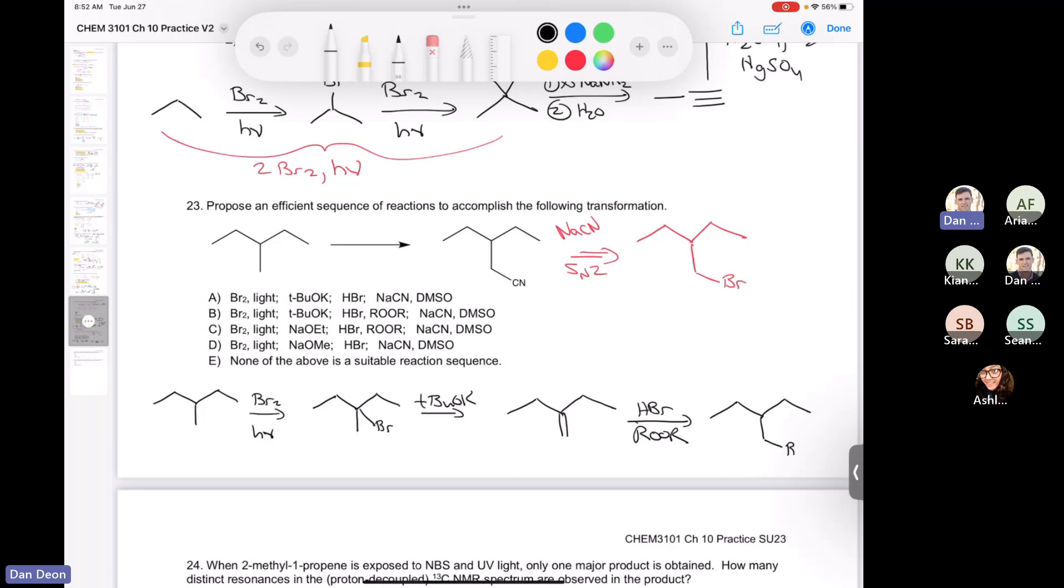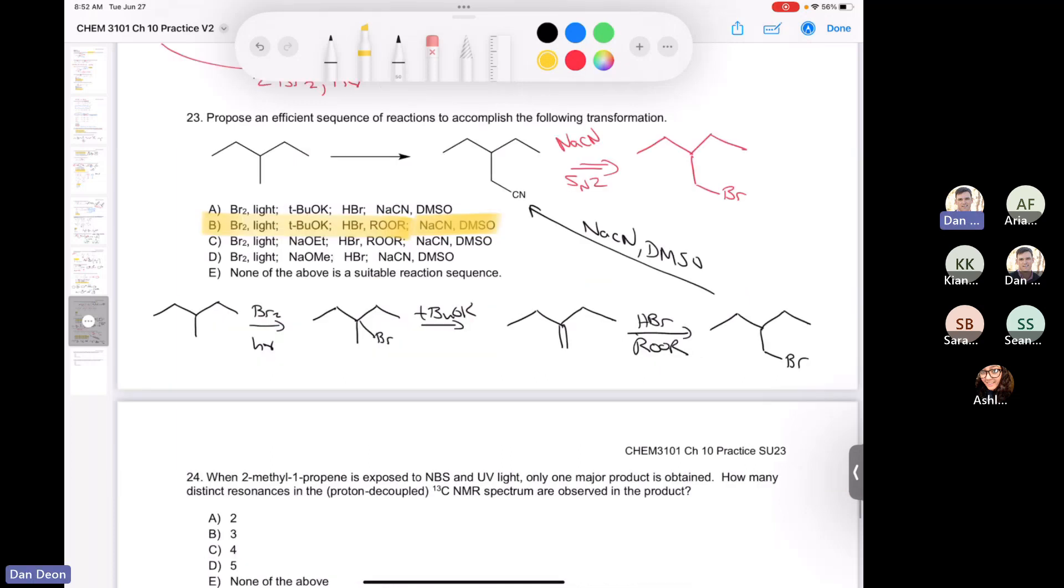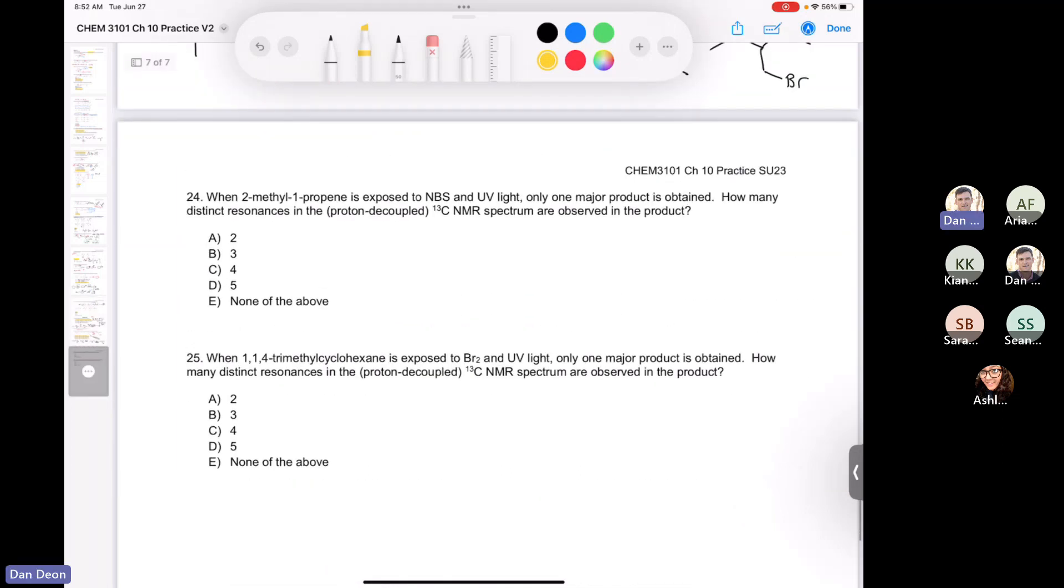And then to get here, I'm just going to use sodium cyanide and do my SN2. And DMSO is just a polar aprotic solvent which promotes SN2 reactions. And so the answer is the second one, I believe: bromine, potassium t-butoxide, anti-Markovnikov addition of HBr, and then sodium cyanide in dimethyl sulfoxide, which again is a solvent that promotes SN2 reactions.